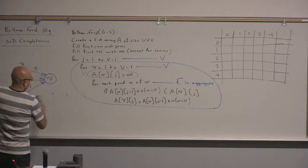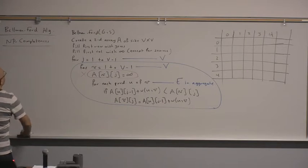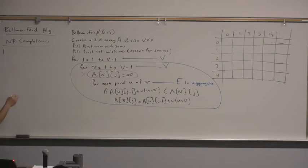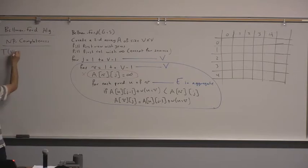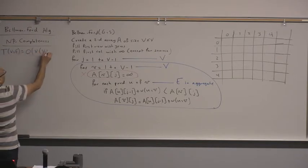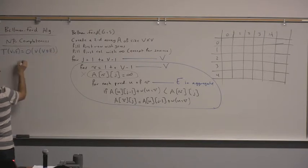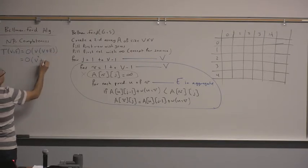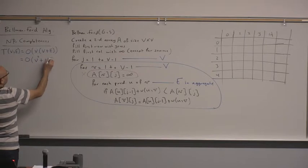The total running time is O(V) multiplied by (V+E), which gives T(V,E) = O(V·(V+E)) = O(V² + VE).